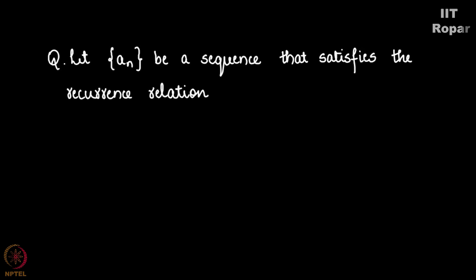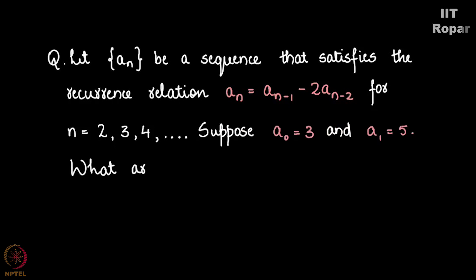The example goes like this: let An be a sequence that satisfies the recurrence relation An = An-1 - 2An-2 for n = 2, 3, 4, and so on. Suppose A0 = 3 and A1 = 5, then what are A2 and A3?